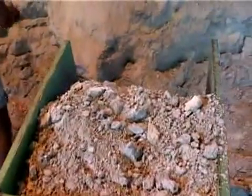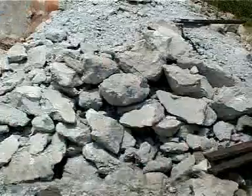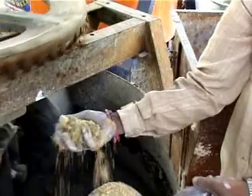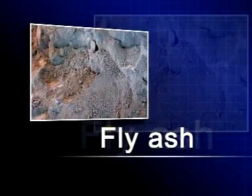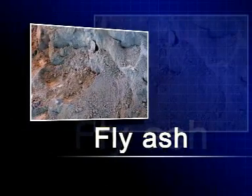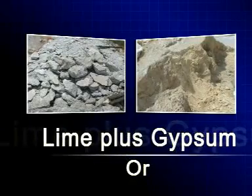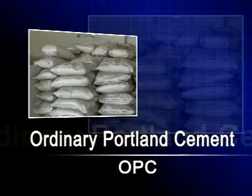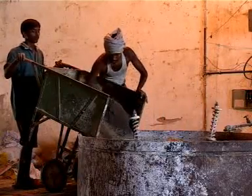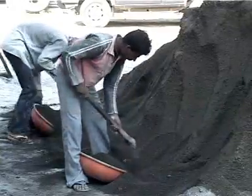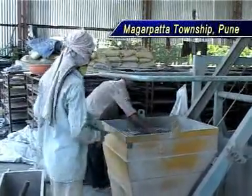Raw materials required for making fly ash bricks are: fly ash, sand or stone dust, and lime plus gypsum or ordinary Portland cement (OPC). The manufacturing process of ash bricks requires a proportionate mixture of fly ash, sand or stone dust, lime, and gypsum.